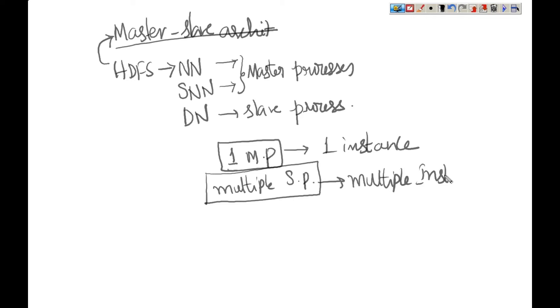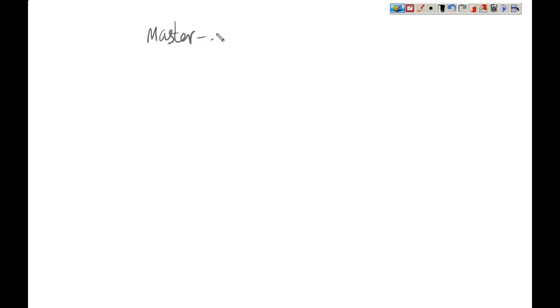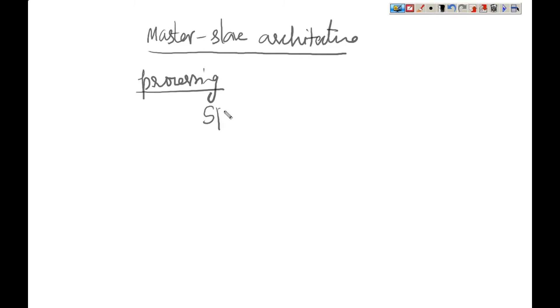HDFS is only for storage. Spark is for processing, and it requires the same master-slave architecture. If you want to process data using Spark, the underlying architecture in the cluster must be master-slave architecture.